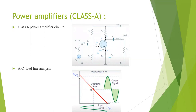The vertical intersection point is called the saturation current point, and the horizontal intersection point is called the cutoff voltage point. If the operating point moves towards the saturation current point, the top of the output signal is clipped off. In the same way, when the operating point moves towards the cutoff voltage point, the bottom of the output signal will get cut off. So it is very important to maintain the operating point at the center of the load line.